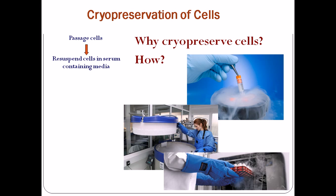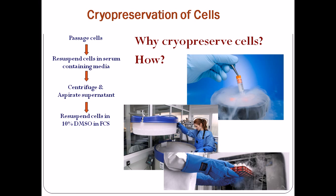After that we re-suspend the cells in serum-containing media, and then we do a centrifugation for pelleting out all the other debris. All that debris is pelleted and we aspirate the supernatant. Once you aspirate the supernatant, the supernatant contains the cells while other debris remain in the pellet after centrifugation. We discard the pellet, take the supernatant, and re-suspend it in 10% DMSO in FCS.